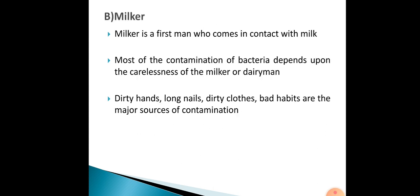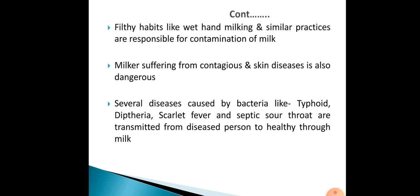The milker is also a source of contamination to milk. The milker is the first person who comes in contact with the milk. Most bacterial contamination depends upon the carelessness of the milker or dairyman. Dirty hands, long nails, dirty clothes, and bad habits are major sources of contamination. Filthy habits like wet hand milking and similar practices are responsible for the contamination of milk.